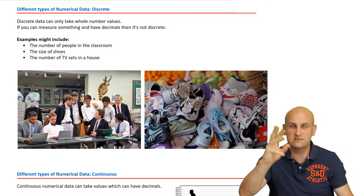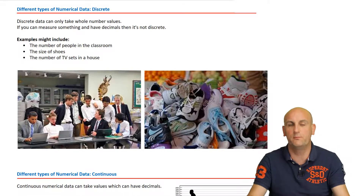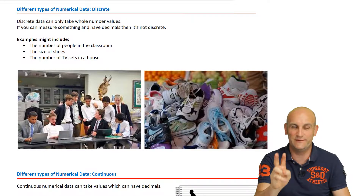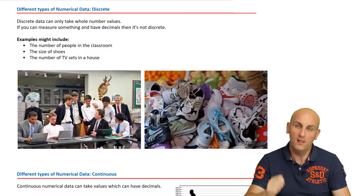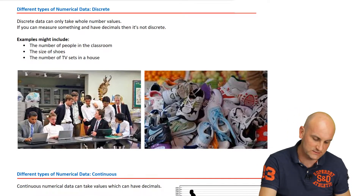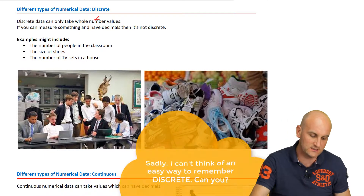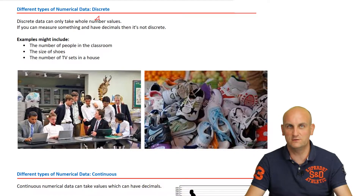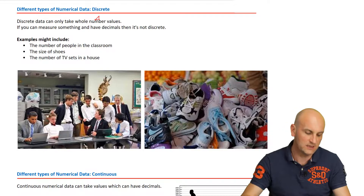And then we can subdivide them — we can split them up. For numerical data, there are also two different types. The first one is discrete. So can you see that here? Discrete data can only take whole number values — these are things that we can count.